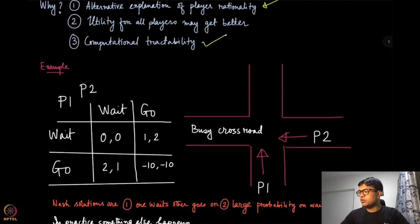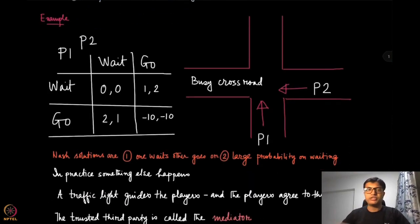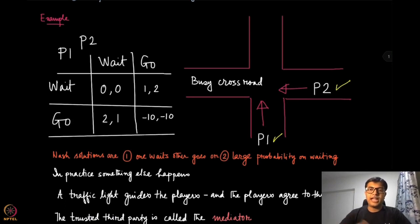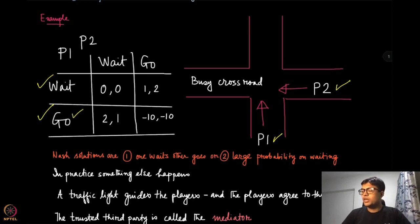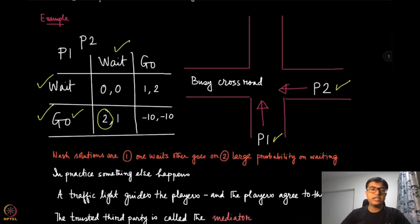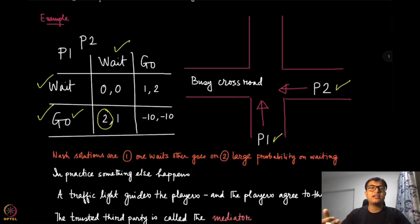One classic example for correlated strategy is the following. Suppose there are two cars — player one and player two — at a busy crossroad, deciding whether to wait or go. If both wait, they waste time and get zero. If one goes while the other waits, the moving car gets a higher payoff while the waiting car gets a positive payoff, knowing it will move next.